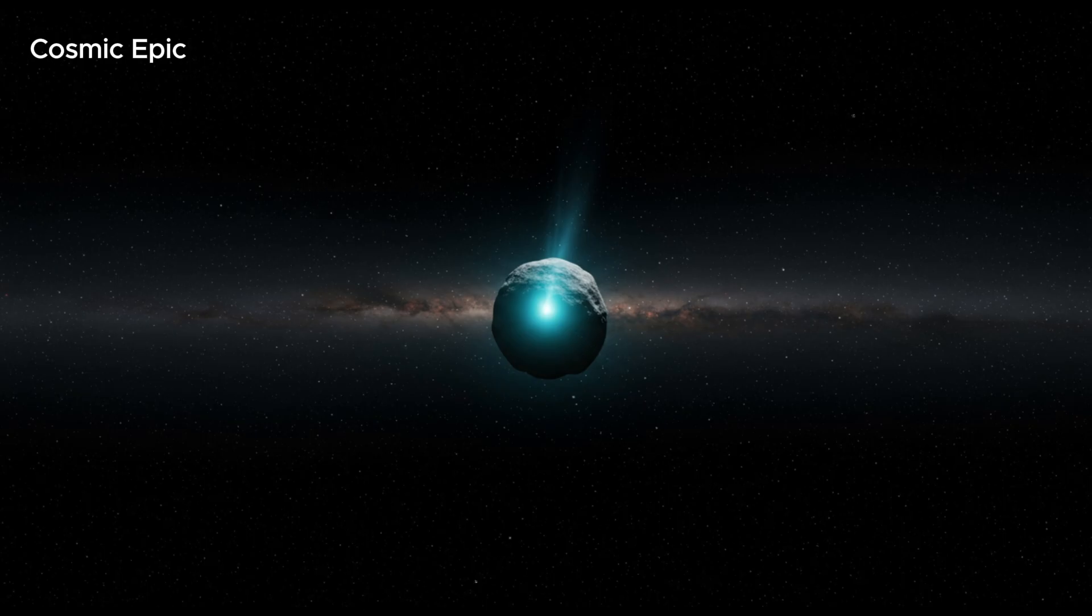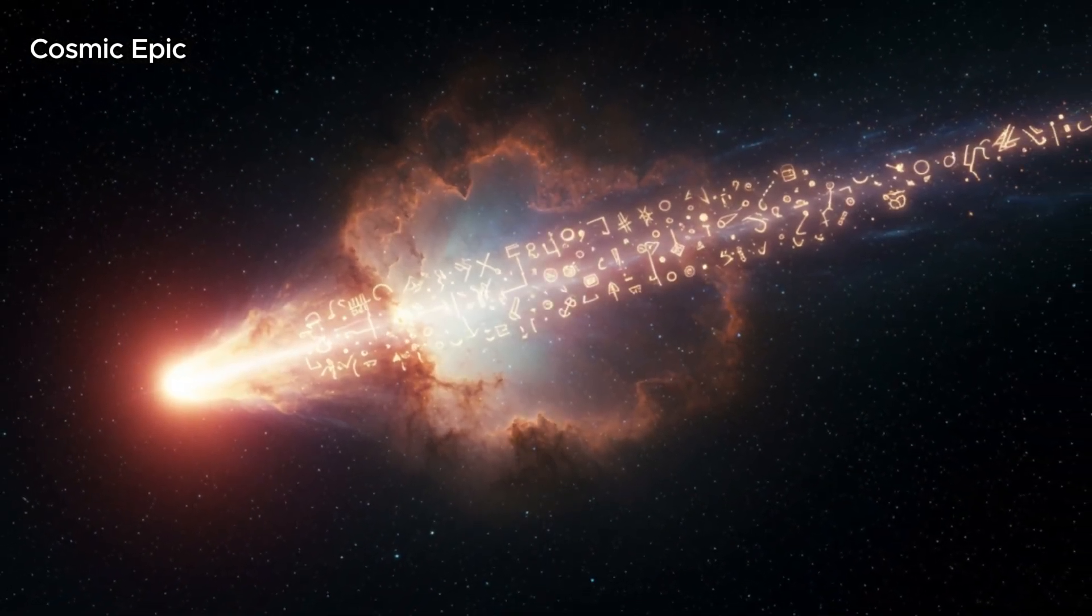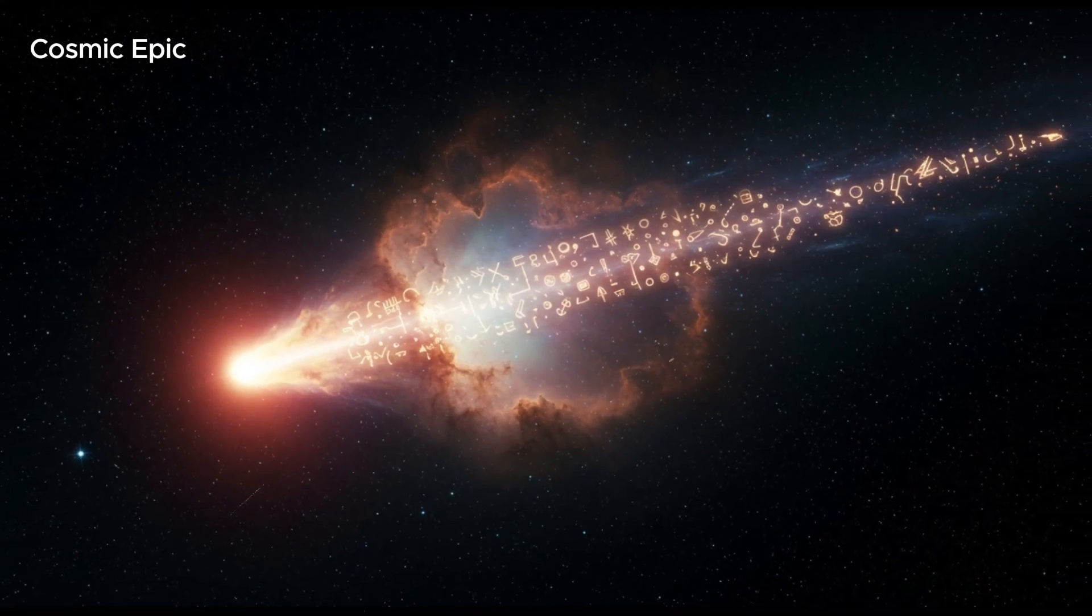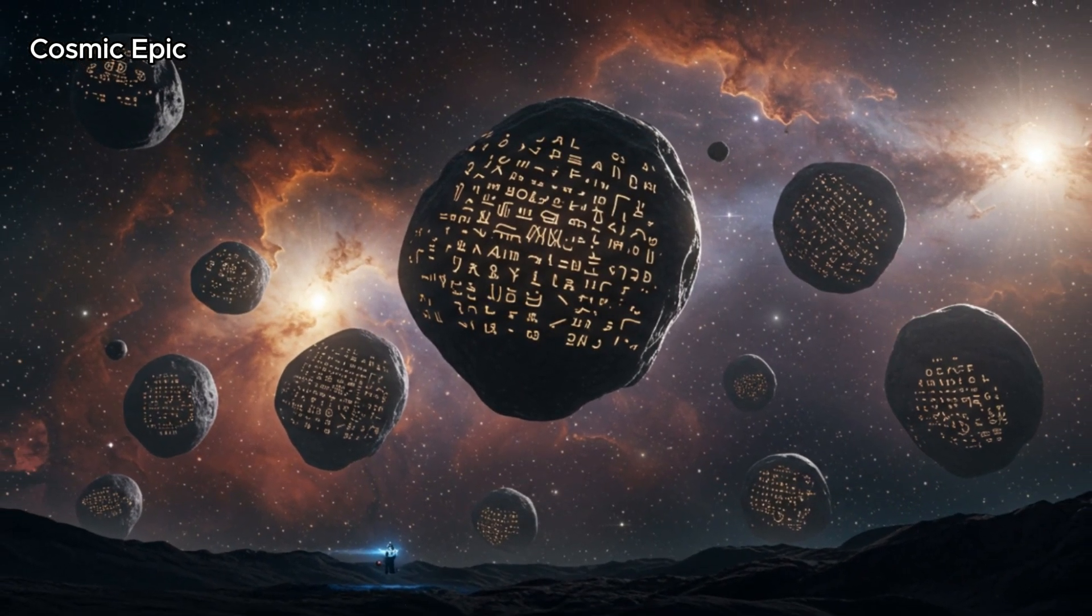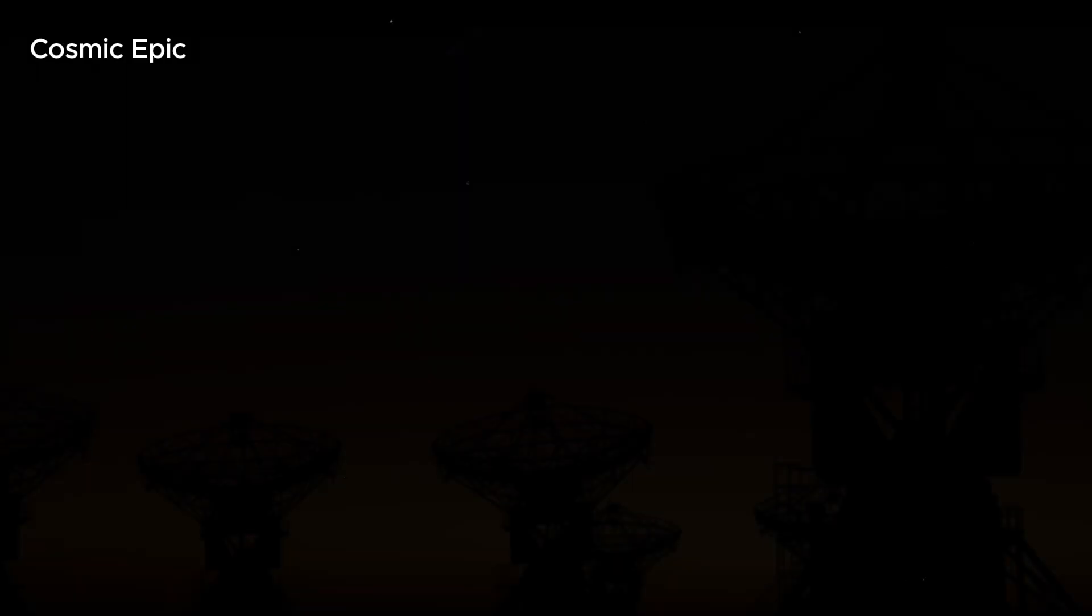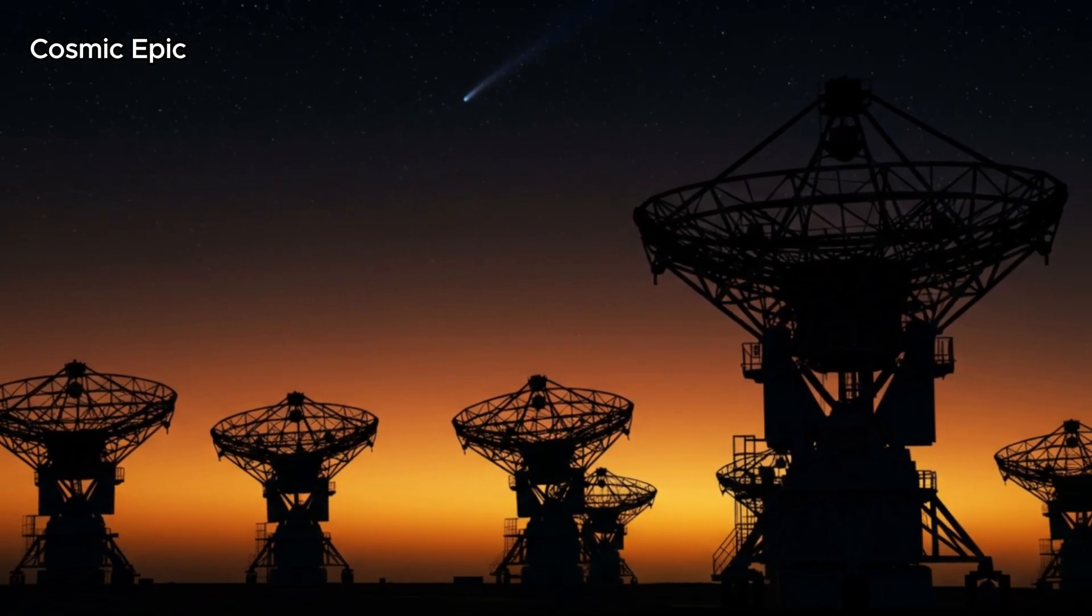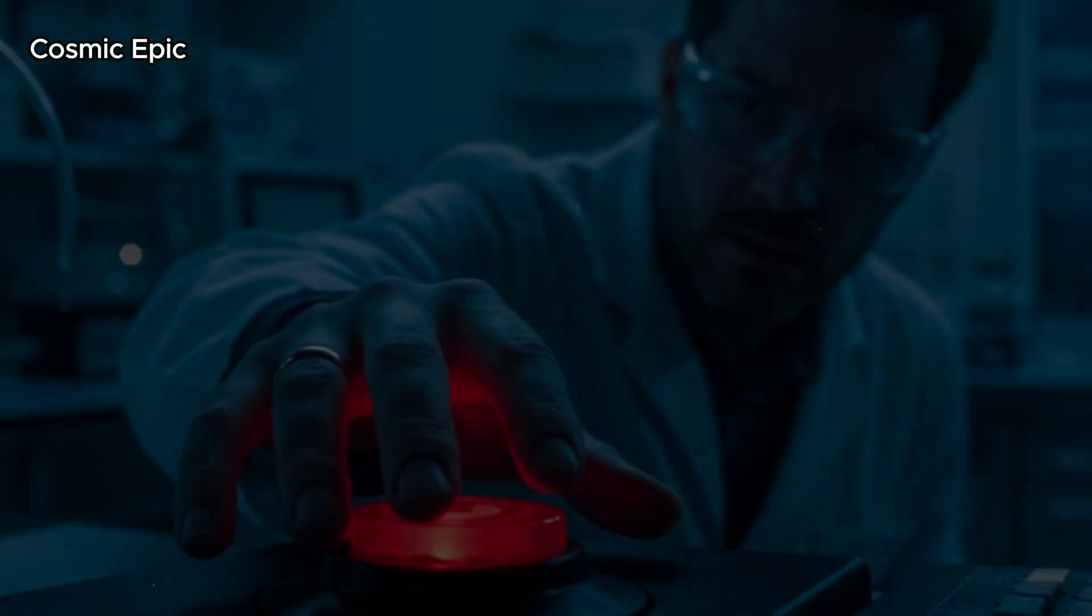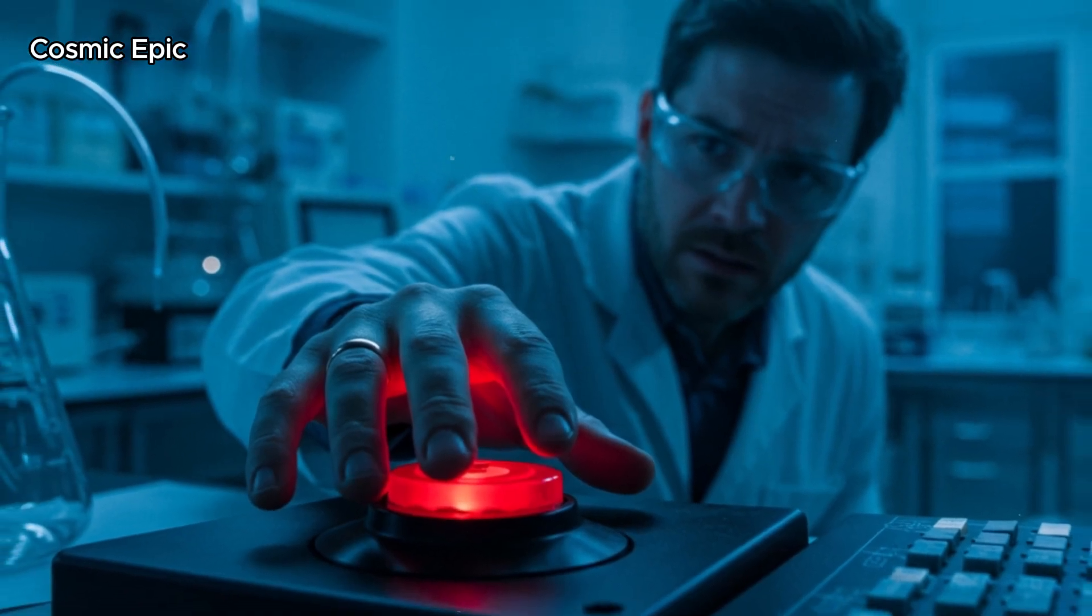That's not normal for comets. Most are rough, cratered and uneven, like broken pieces of ancient collisions. But 3i/Atlas doesn't behave like that. Some scientists think its smoothness means its surface has been frozen and untouched for millions of years, maybe even longer. Others wonder if it's not entirely natural, because when you compare it to the other interstellar visitors, it stands out. It spins slower than Borisov. It's smoother than Oumuamua. And it's traveling faster than both. These differences don't just make it strange. They make it unique.